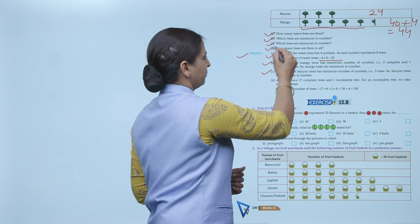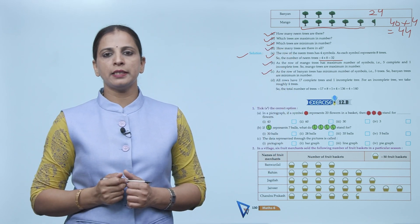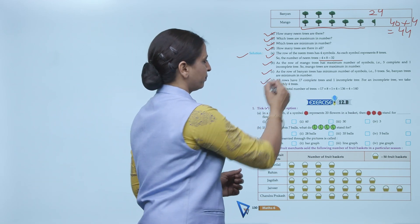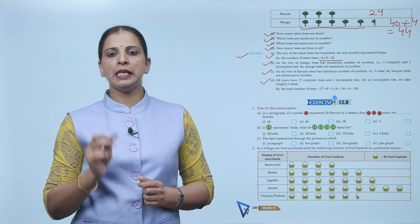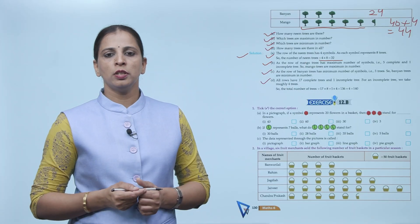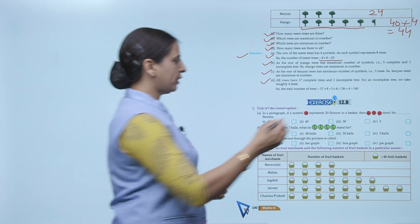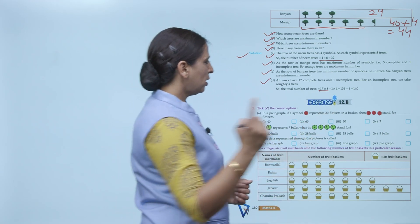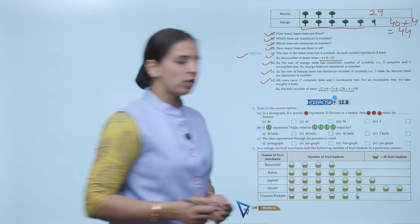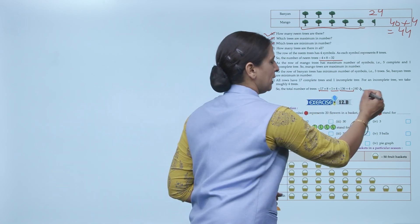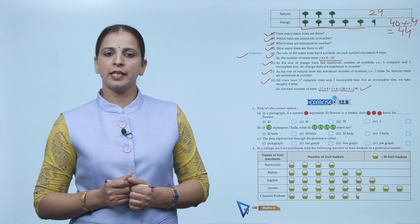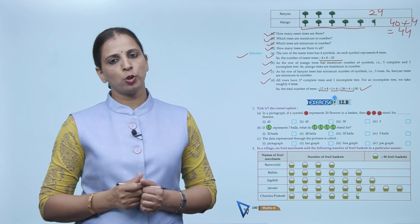Part (d): How many trees are there in all? All rows have 17 complete tree symbols and 1 incomplete. For the incomplete tree we take roughly 4 trees. Total = 17 × 8 + 4 = 136 + 4 = 140 trees. I hope the chapter is clear to you — please do the exercise and revision on your own.